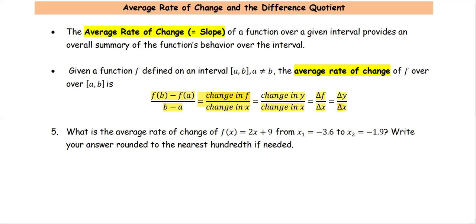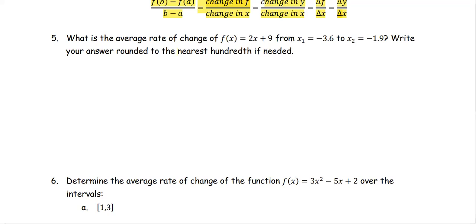Let's take a look at the example. In this example, what is the average rate of change if the function f(x) equals 2x plus 9, x1 equals negative 3.6, x2 equals negative 1.9? Write your answer rounded to the nearest hundredth if needed.